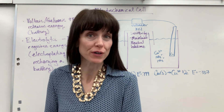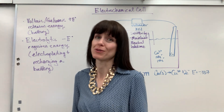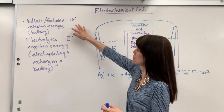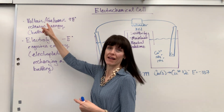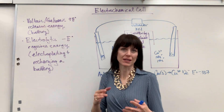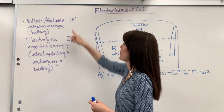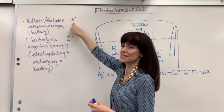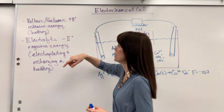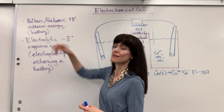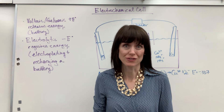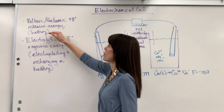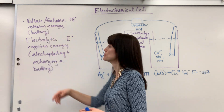Hi, I'd like to give you an overview of electrochemical cells. We have two categories of electrochemical cells. The first one is called voltaic or galvanic — just two names for the same thing. That means our potential is positive. We have a positive standard reduction potential, e-value, which means it releases energy. A really good example of this: batteries. All of our batteries are going to be a voltaic cell.